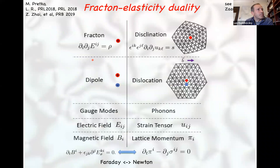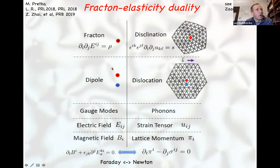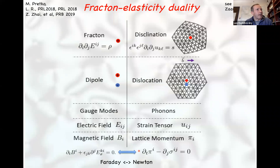Another important development I was part of is the observation that these tensor gauge theories with the double-divergence Gauss's law are in fact dual to elasticity in crystals. Stresses and strains are dual to the electric field tensors, the fracton charges are dual to disclinations, the dipoles are dual to dislocations, and Faraday's law maps onto Newton's law or the momentum continuity equation.